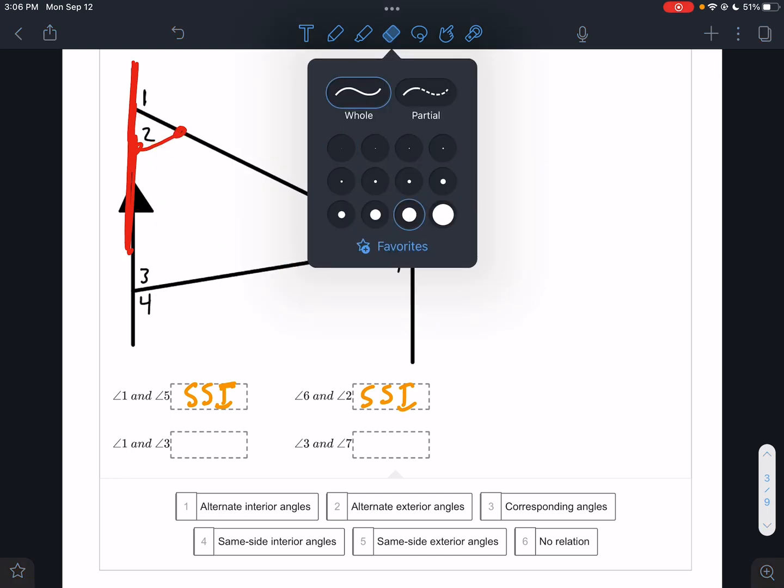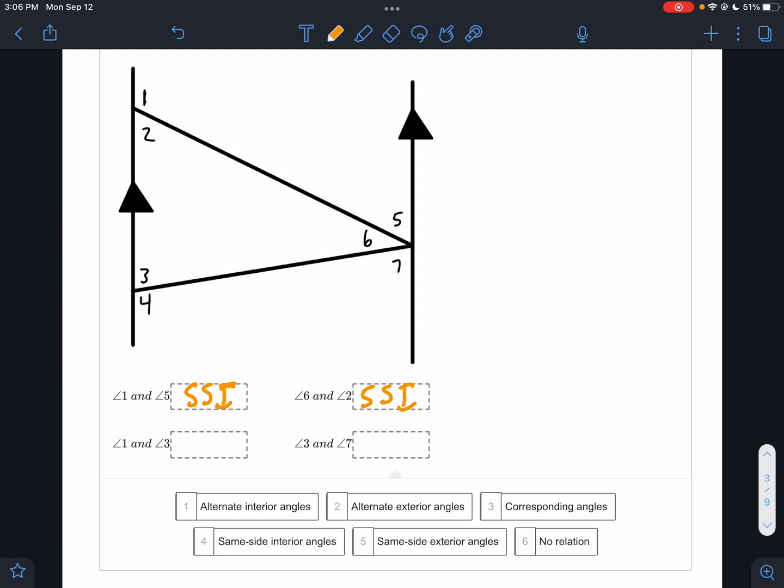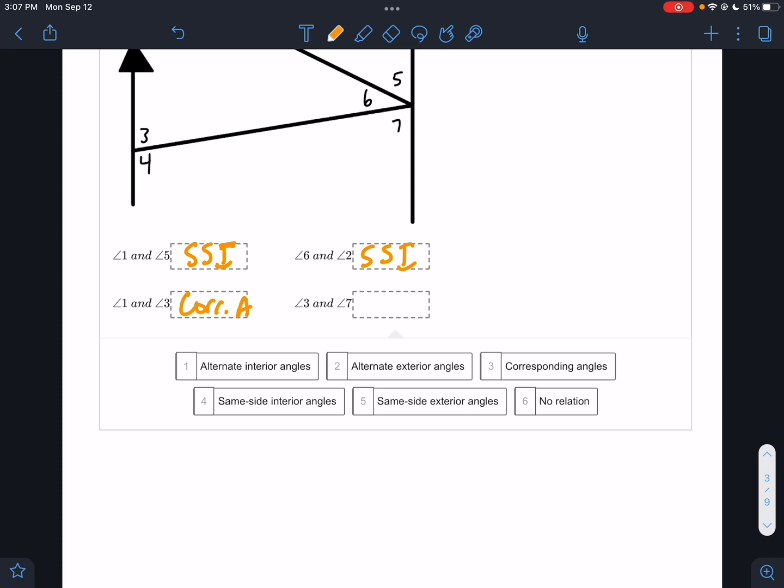Next one is angle 1 and 3. Trace angle 1, trace angle 3. So this is the transversal. And the other two lines, by the way, they're on the same side. So when you draw that transversal, they're on the same side. So we know they're the same side already. The other two lines for these would be here and here. So if I'm looking at this, 3 is on the inside, but 1 is on the outside. If you remember, if there's one inside and one outside, and they're on the same side, that is called corresponding angles.